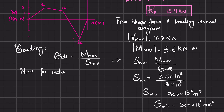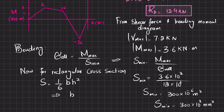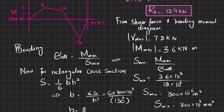For a rectangular cross-section, S = (1/6)bh². Solving for b: b = 6S / h² = (6 × 300 × 10³) / (150²) = 80 mm. This value of b is based on the bending stress criterion.